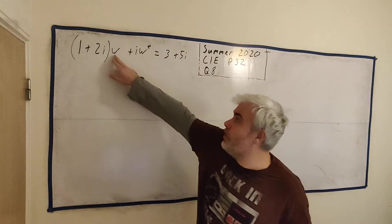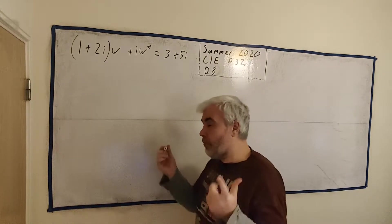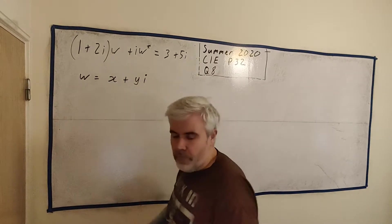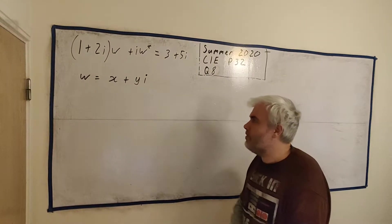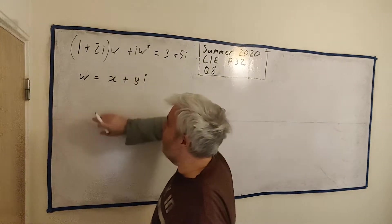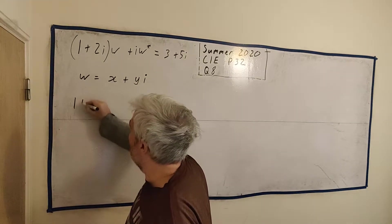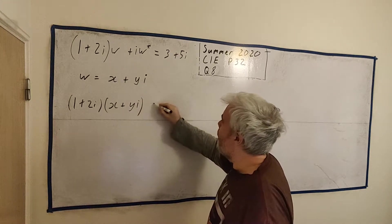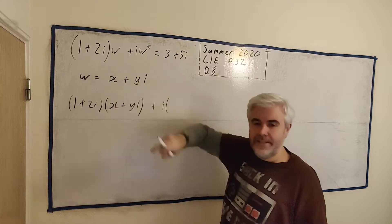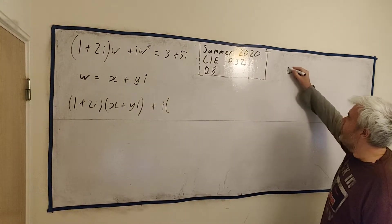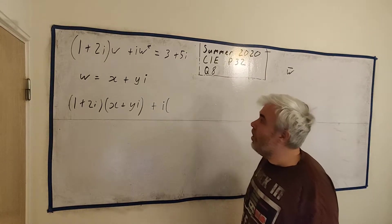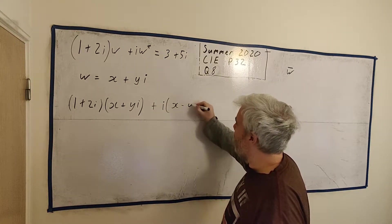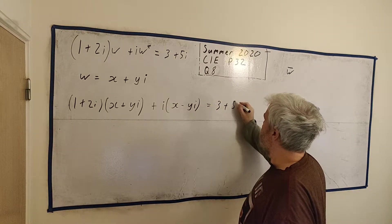Part A wants us to solve this equation here. So let's jump right into that. W is what we're solving for. One of the ways to do this, the easiest way I find, is that instead of W, let's write W as x plus yi. And they want it in this form anyway so this is helpful for us.